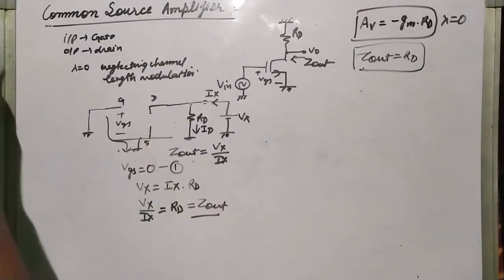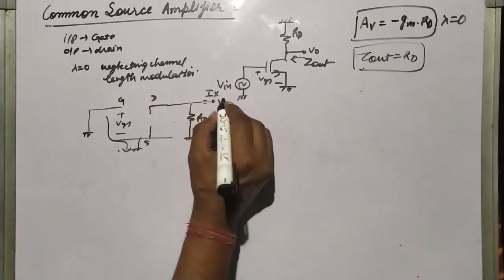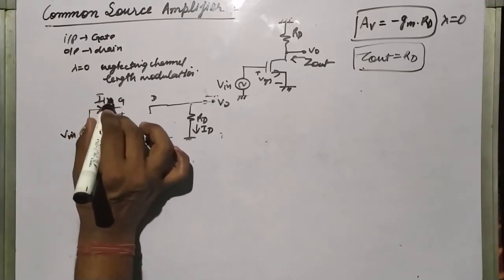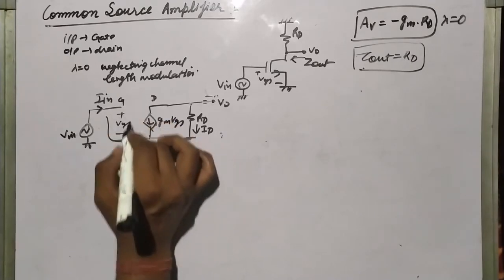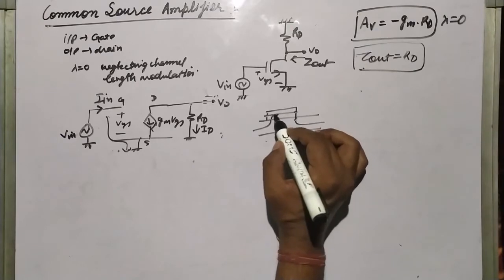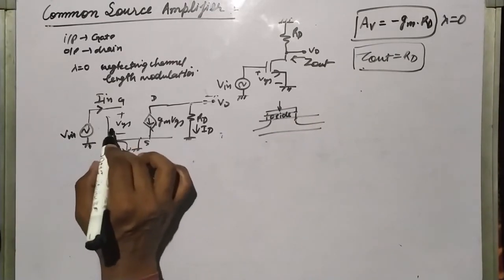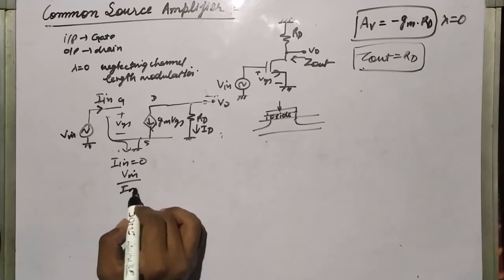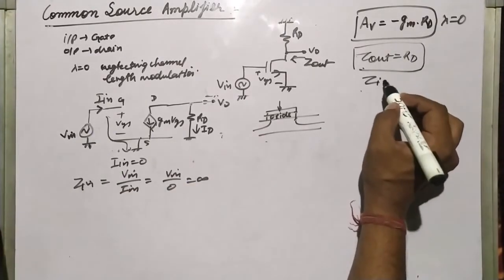Now let's calculate Z_in, the input impedance. The current I_in flowing into the gate is zero, because in a MOSFET there is an oxide layer at the gate which prevents current flow. Since I_in equals zero, Z_in equals V_in divided by I_in equals V_in divided by zero, which is infinite. So Z_in equals infinity.